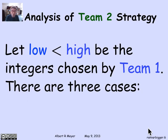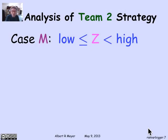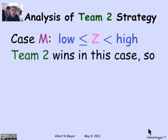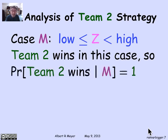We consider three cases based on where z falls. The most interesting is the middle case: z happens to fall strictly between low and high — that is, z is greater than or equal to low and strictly less than high. In this case, z is guiding you correctly. If you turn over the low card, it looks low because it's less than or equal to z, so you switch to the high card and win. If you turn over the high card, it's greater than z, so it looks high and you stick with it. In this middle case, you're guaranteed to win — probability 1.